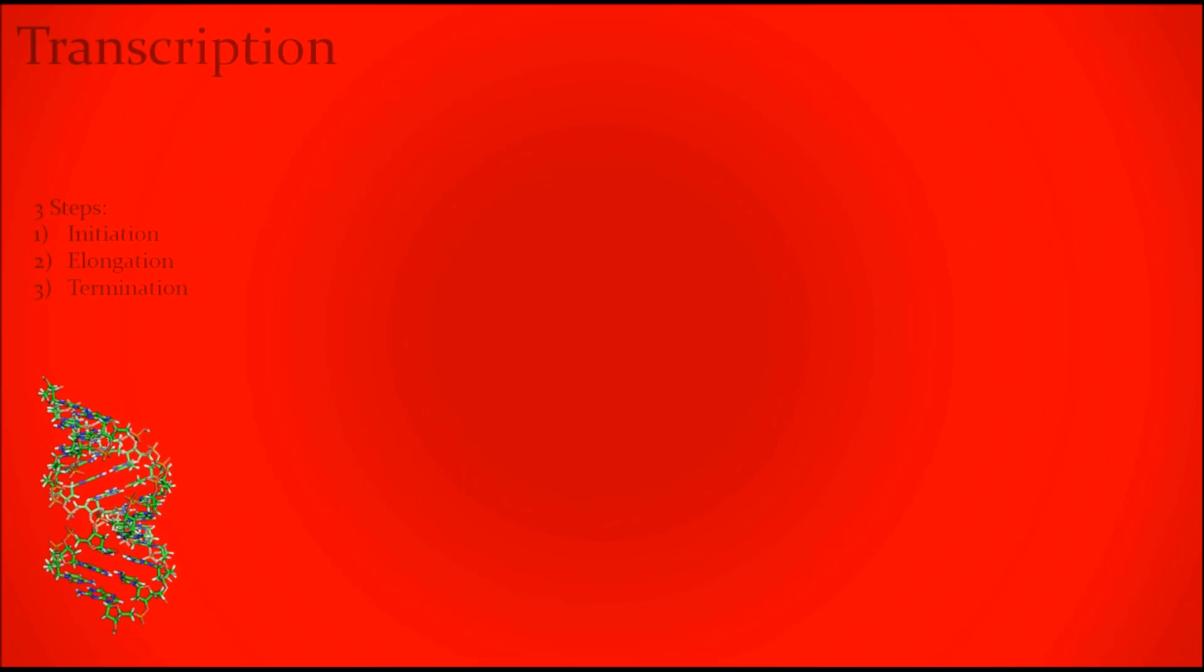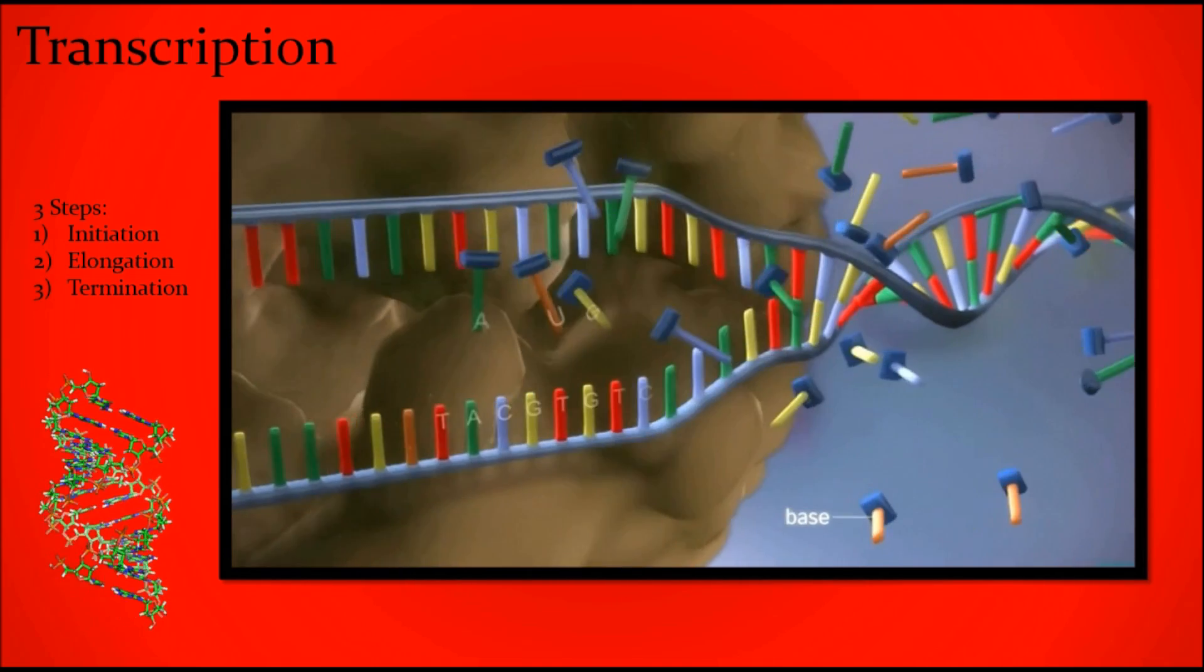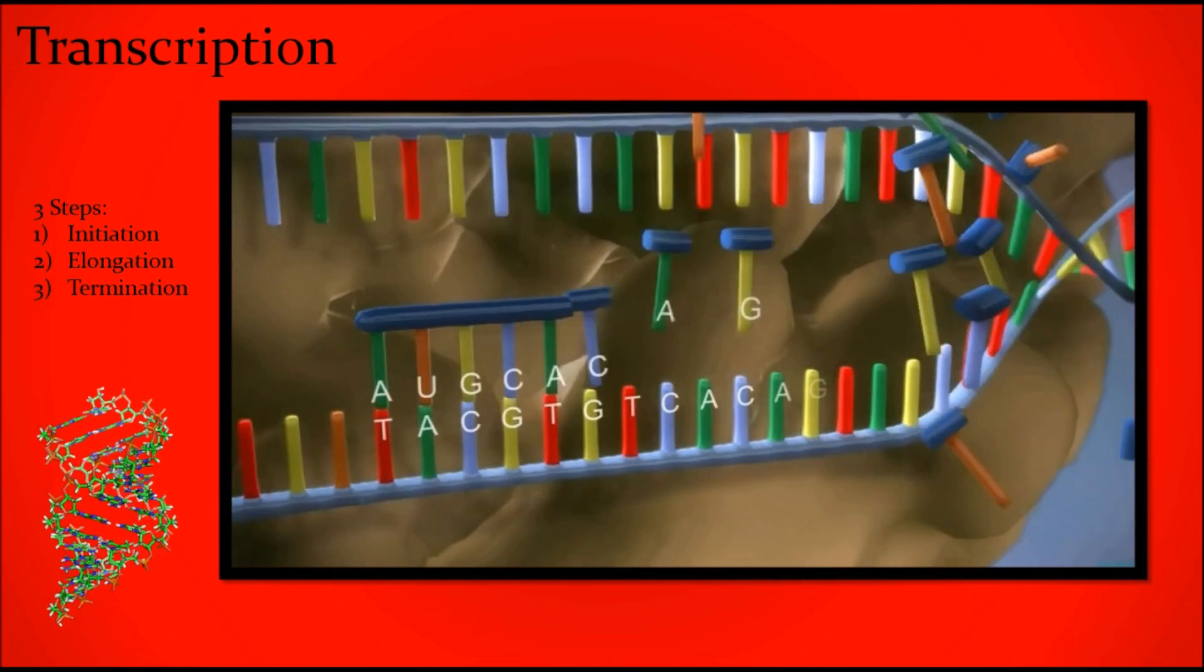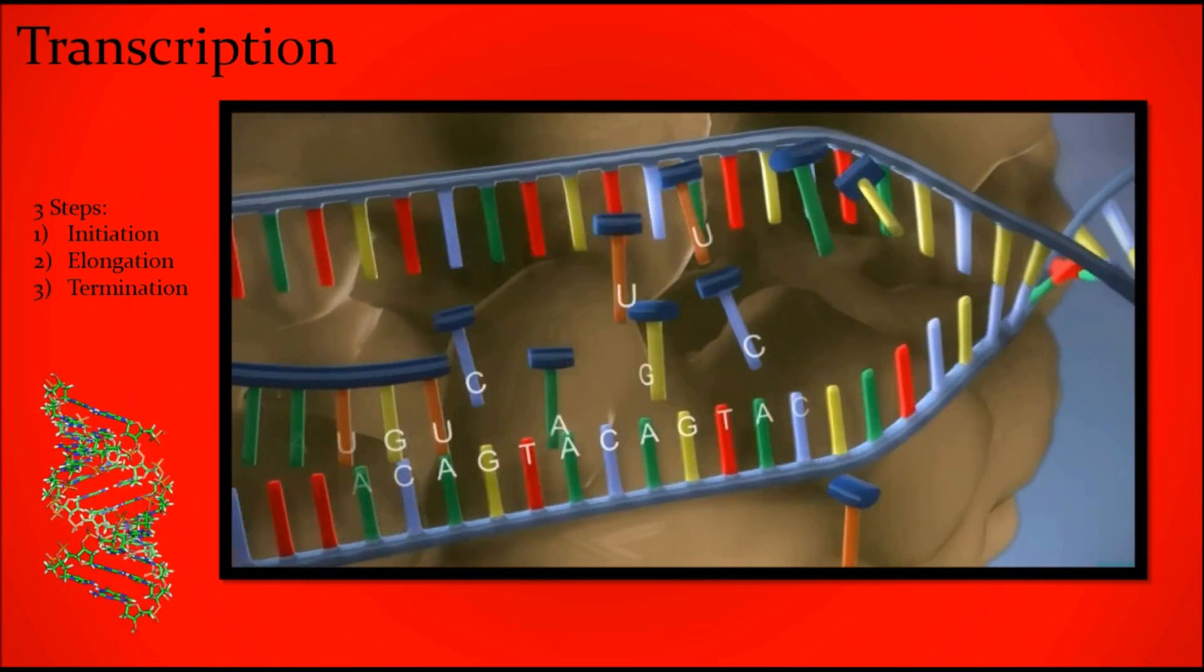RNA polymerase pries open the DNA - complementary mRNA is made - starts with initiation